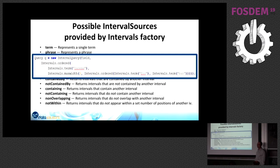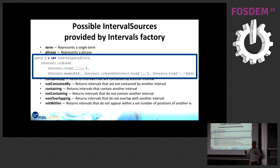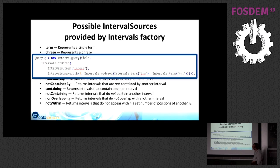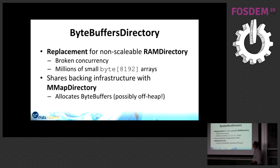The new interval queries are currently only in the sandbox of Lucene, not yet in the main changelog, but Elasticsearch in the next version will already have a query parser for those — so you can see how the JSON would look. Unfortunately Solr does not have support for that yet, but it should come quite soon.